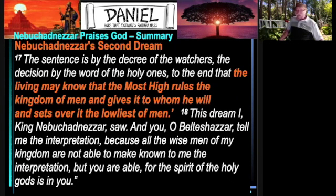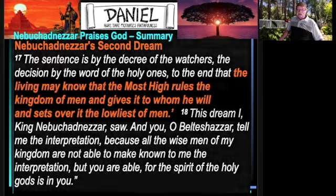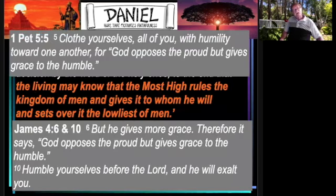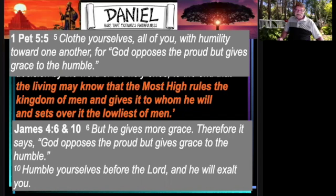This is our passage, verses 1 through 18. So how do we apply this to us? Let's remember the instructions we have in the New Testament, in 1 Peter 5 and in James 4. Here we find both a warning and an encouragement. 1 Peter 5:5: 'Clothe yourselves, all of you, with humility toward one another, for God opposes the proud but gives grace to the humble.' James 4 says the same thing: 'God opposes the proud but gives grace to the humble. Humble yourselves before the Lord, and he will exalt you.'